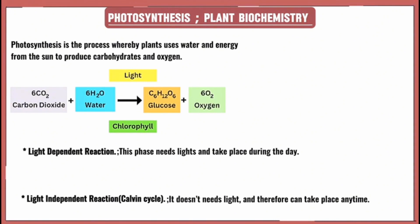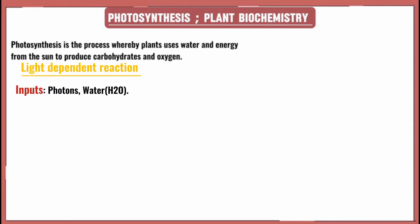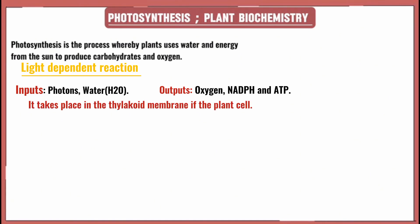In the light-dependent reaction, light energy from the sun is converted into chemical energy. The inputs in this phase are photons — which are the light — and water. The outputs during this phase are oxygen, NADPH, and ATP.